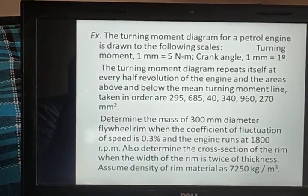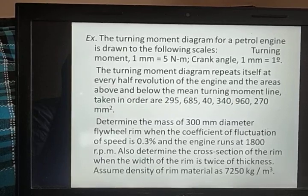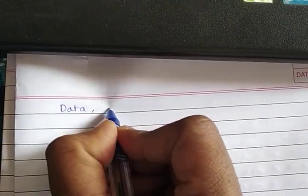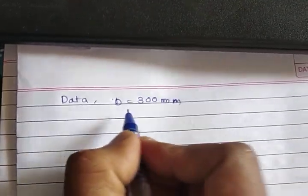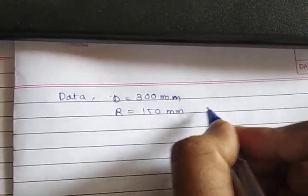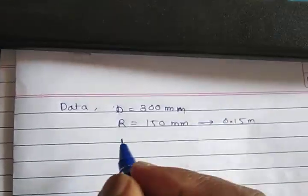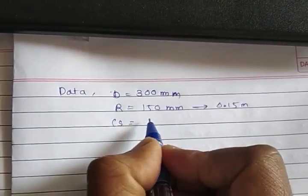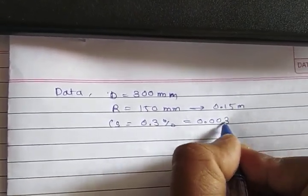Stop the video and try to solve by yourself. Now listing the given data: diameter D equals 300 mm, radius equals 150 mm, which is 0.15 meter. The coefficient of fluctuation of speed Cs is 0.3%, which becomes 0.003 as a decimal.